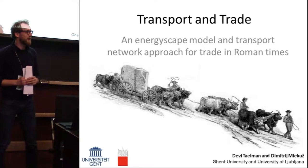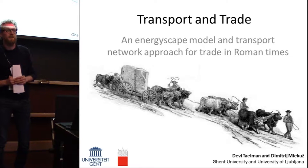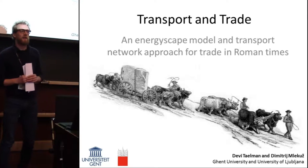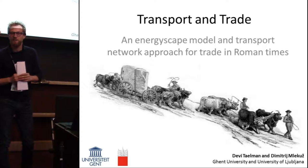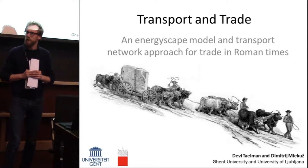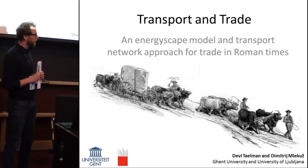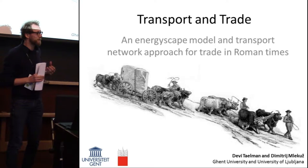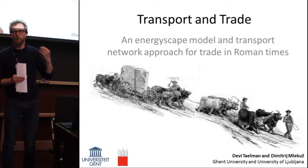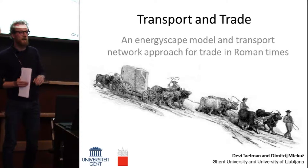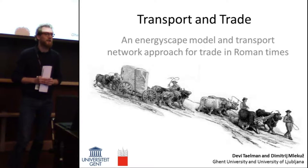We all know that movement of goods and people is a vital part in all human societies. But for complex societies, this importance is even greater, because the production of goods tends to be distributed geographically among all members, all cities, all towns of that society. A good example of such a complex society is the Roman world, which had a very well-developed trade system, with production of goods such as olive oil, wine, stone, and pottery being moved over long distances and in enormous quantities.